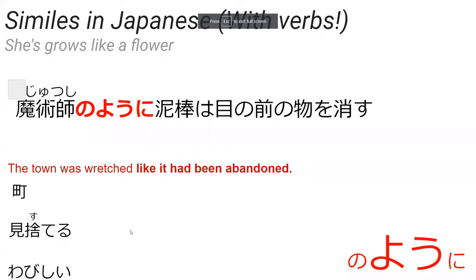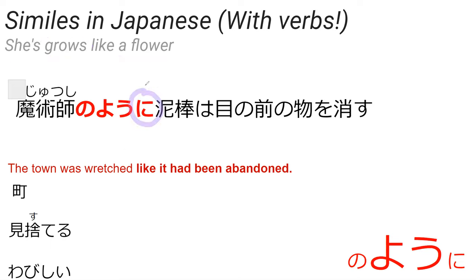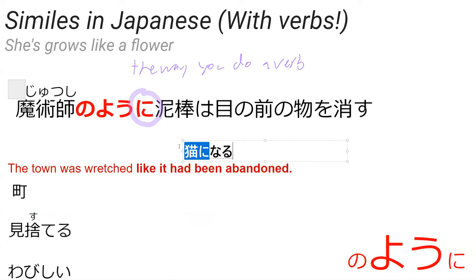Okay, similes. We just saw similes with no, but that was a na-adjective. Na-adjectives put the adjective before a noun to describe it. Sometimes though you don't want to describe a noun — you want to describe a verb. Like 'she grows like a flower' — grows is the verb, and the way they're growing is like a flower. In that case we use ni, because the particle ni can mean 'in the way of doing a verb.' You'll also see ni with naru — so 'neko ni naru' means 'to become a cat.'